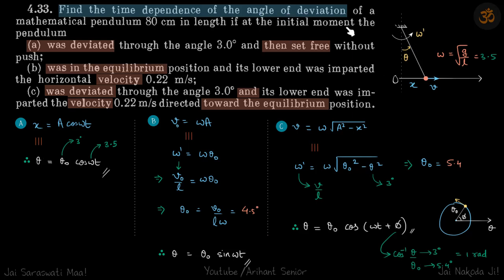This is a conceptual problem where you will learn to relate linear SHM with angular SHM. This is a pendulum undergoing SHM. For a small variation in the angle, we take it to be a straight line and consider it a simple pendulum with SHM and time period 2π√(l/g). That SHM can be analyzed in terms of linear motion where displacement is x and velocity is v, or in angular form where angular displacement is θ and angular velocity is ω'.